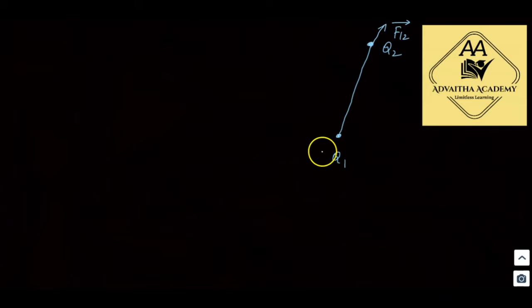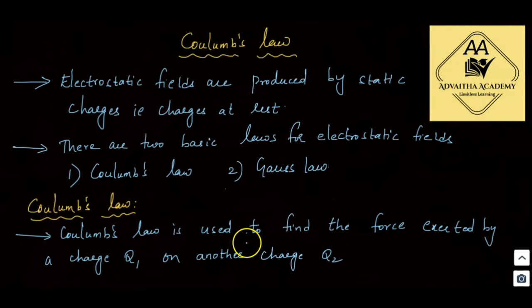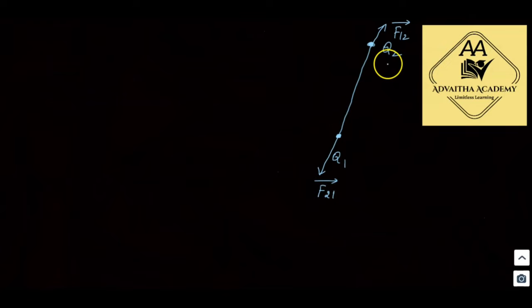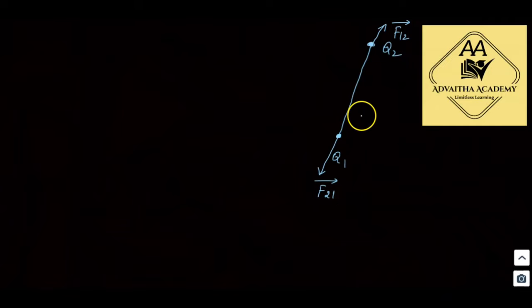F12 is the force exerted by q1 on q2, and F21 is the force exerted by q2 on q1. To find the force between charges in either direction, we use Coulomb's law.